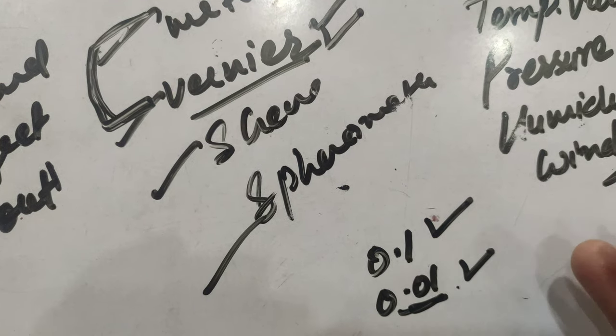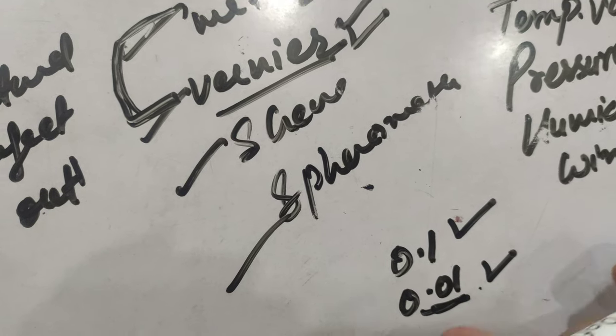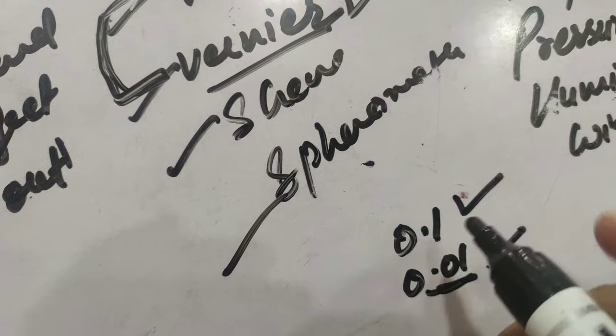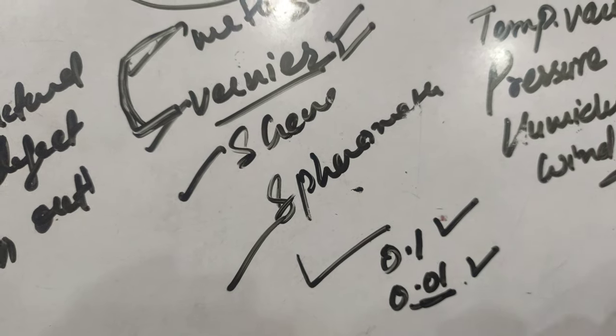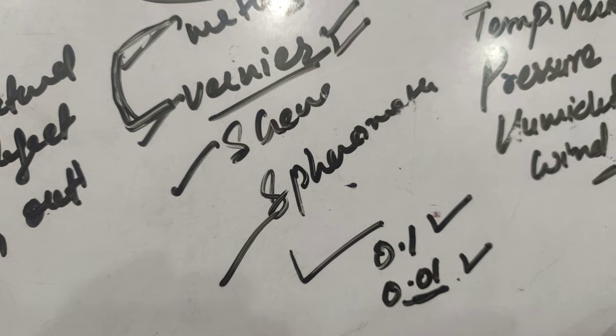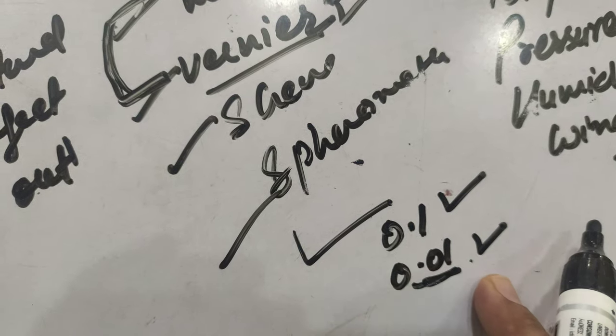Least count, what does this least count mean? Least count means the minimum possible measured value that an instrument can measure. Clearly, if we use a meter scale, the least possible value that we can measure is up to 0.1 decimal place. While for vernier caliper, it is 0.01.